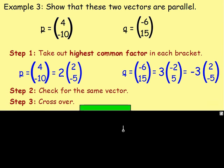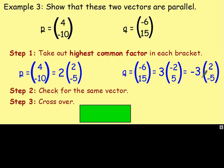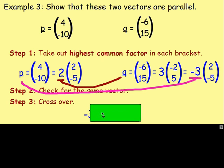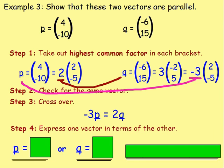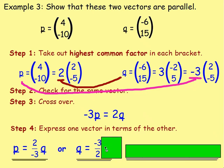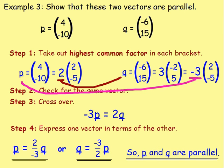After that, we cross over to write one in terms of the other. We've got the negative 3, and that goes with p. Going the other way, we've got the 2 outside this vector, and that goes with q. So we can say that negative 3p equals 2q. Expressing one vector in terms of the other: to get p on its own, divide both sides by negative 3, giving p equals 2 over negative 3 times q. Or to get q on its own, divide both sides by 2, giving q equals negative 3 over 2 times p. One vector is written in terms of the other, so we know that p and q are parallel.